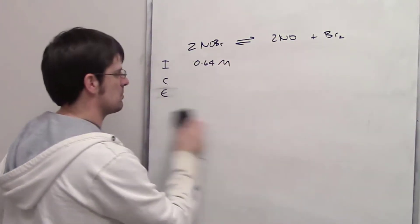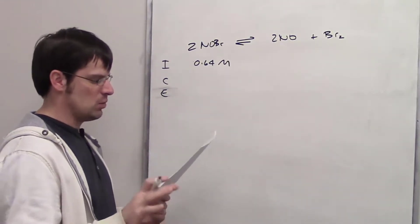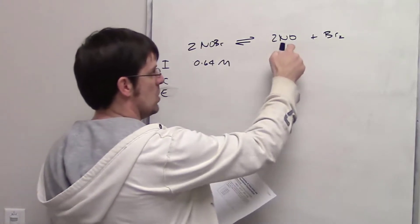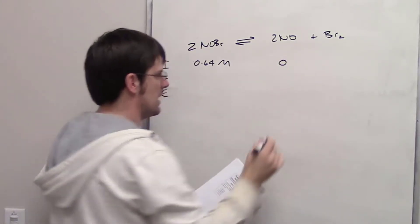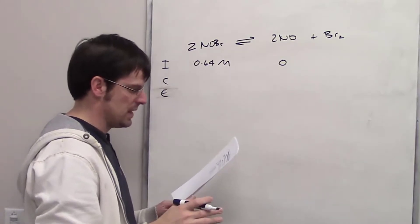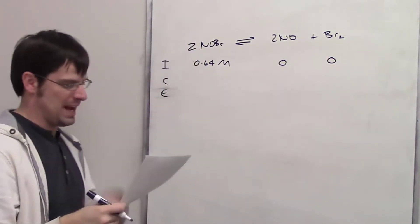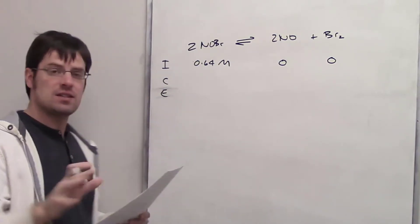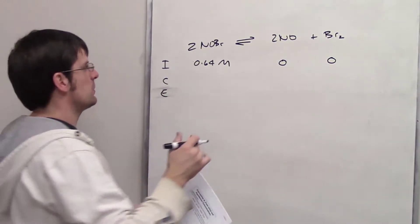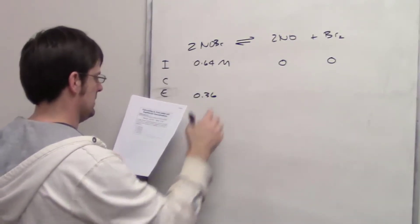The flask initially contains no nitrogen monoxide and no bromine, so zero for both at initiation. At equilibrium, the flask contains 0.36 moles of NOBr.